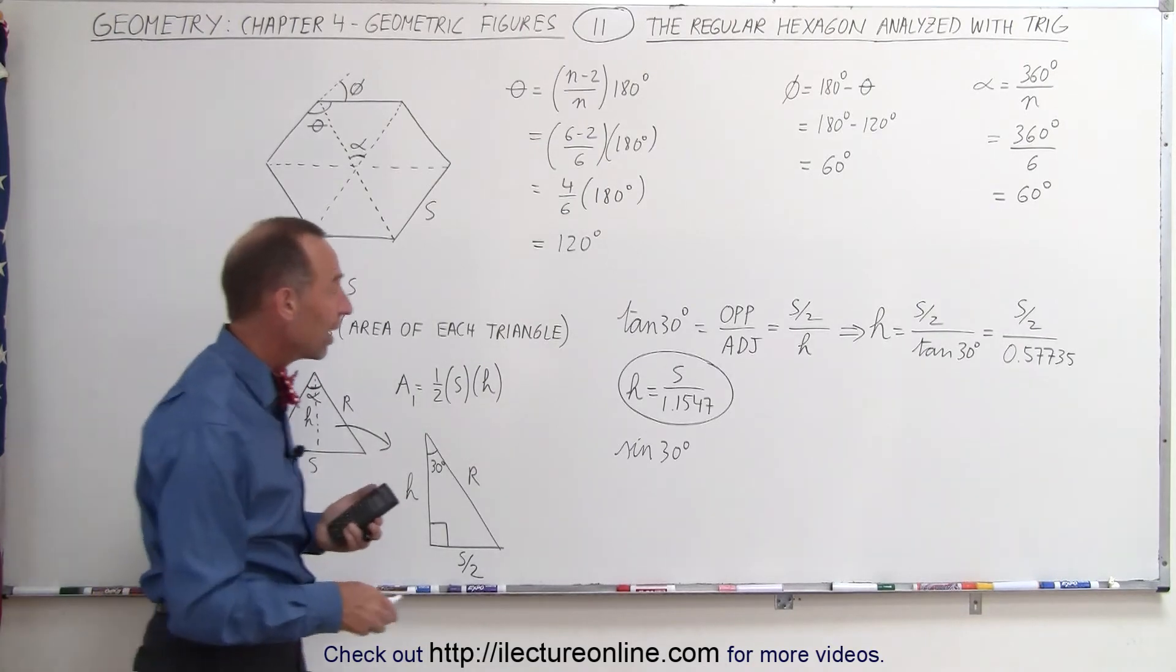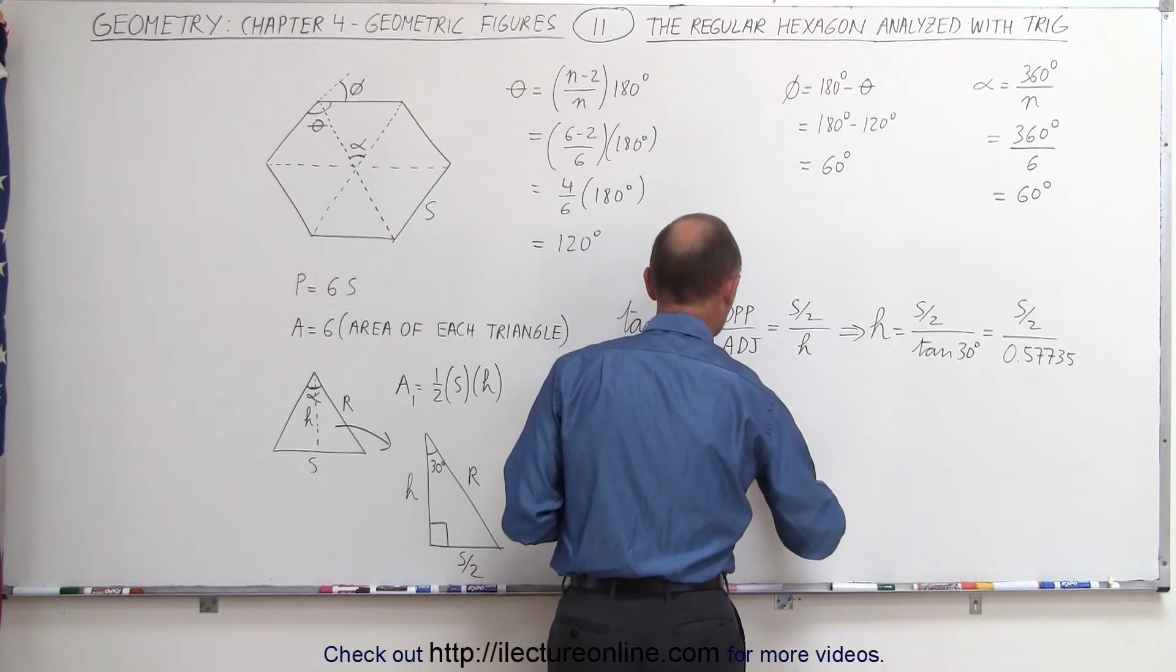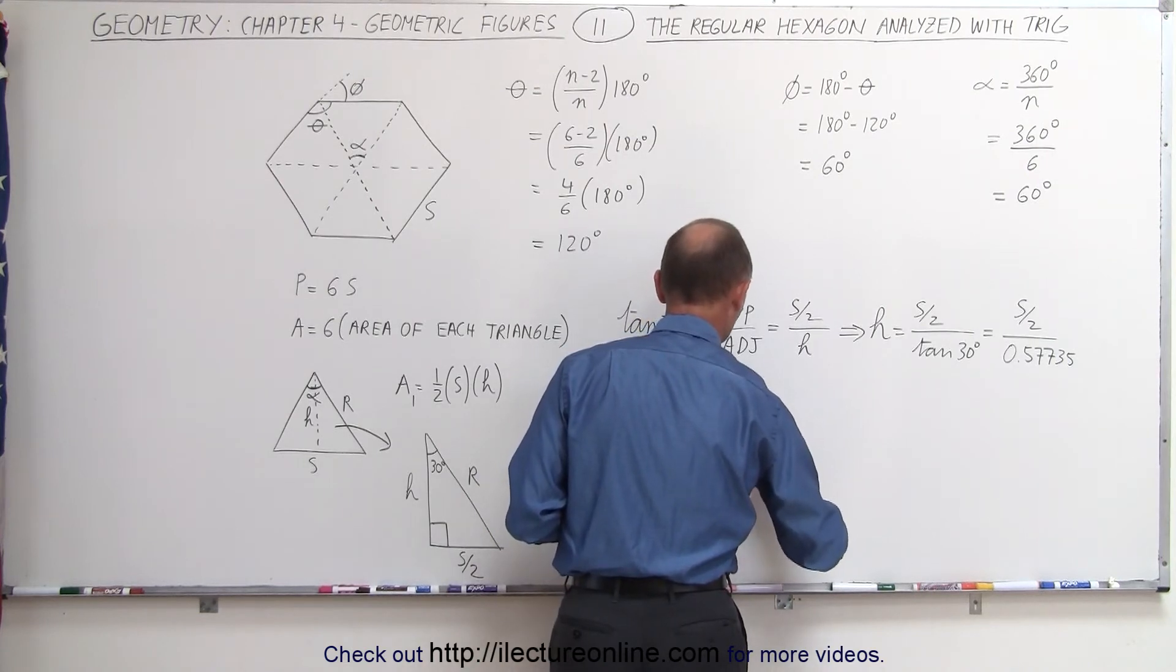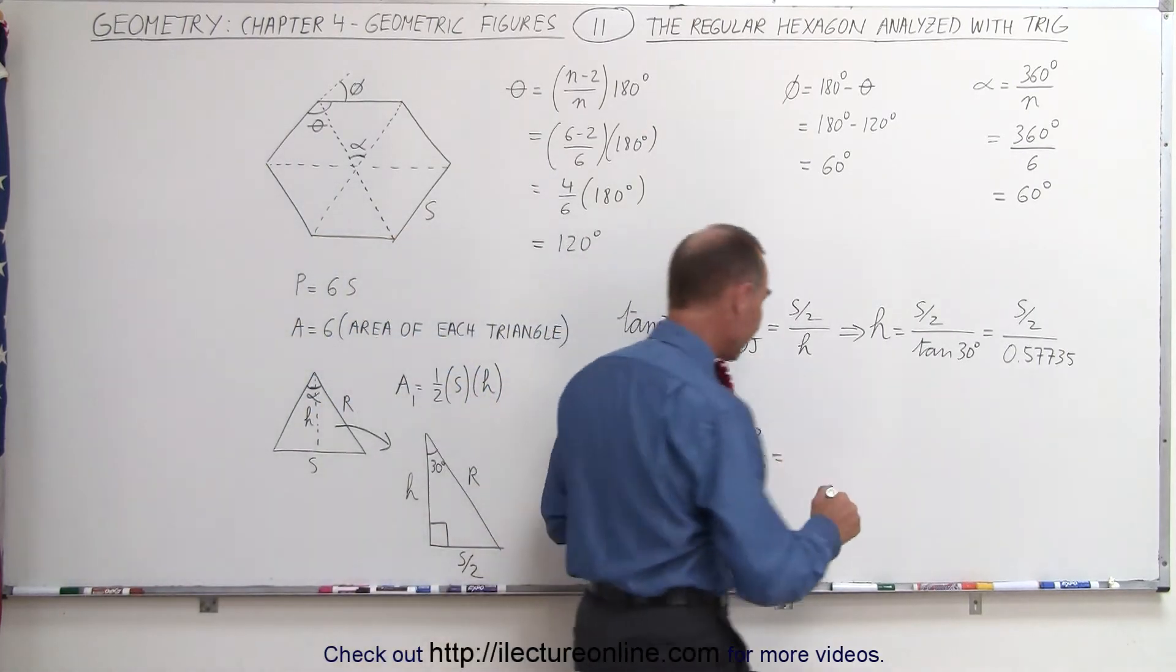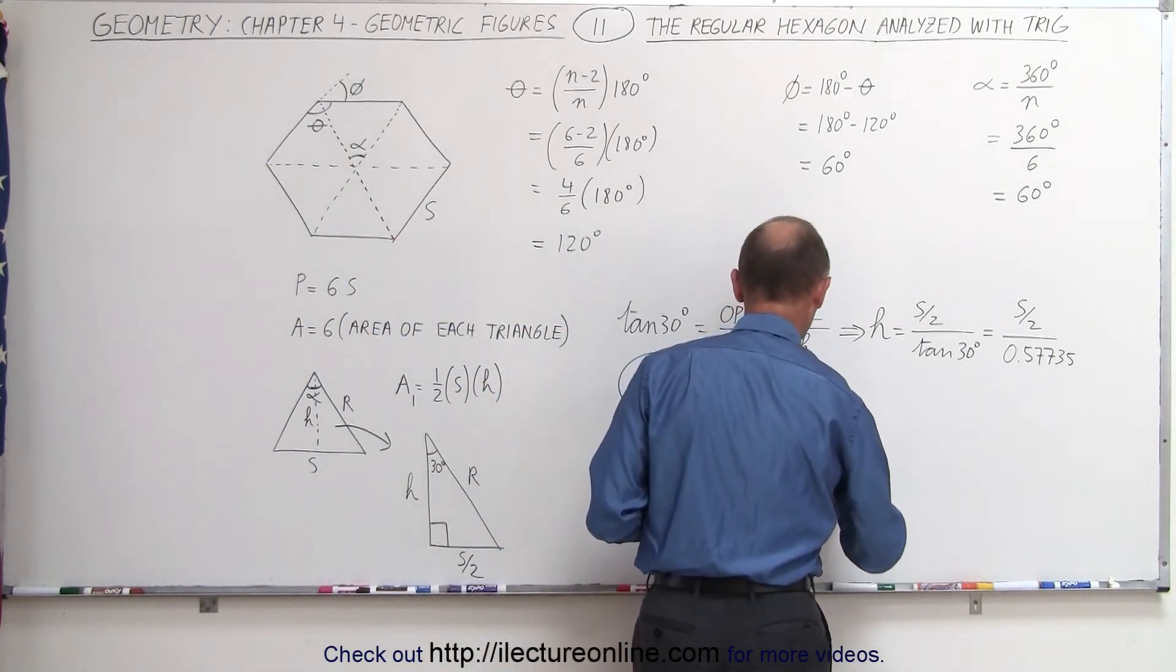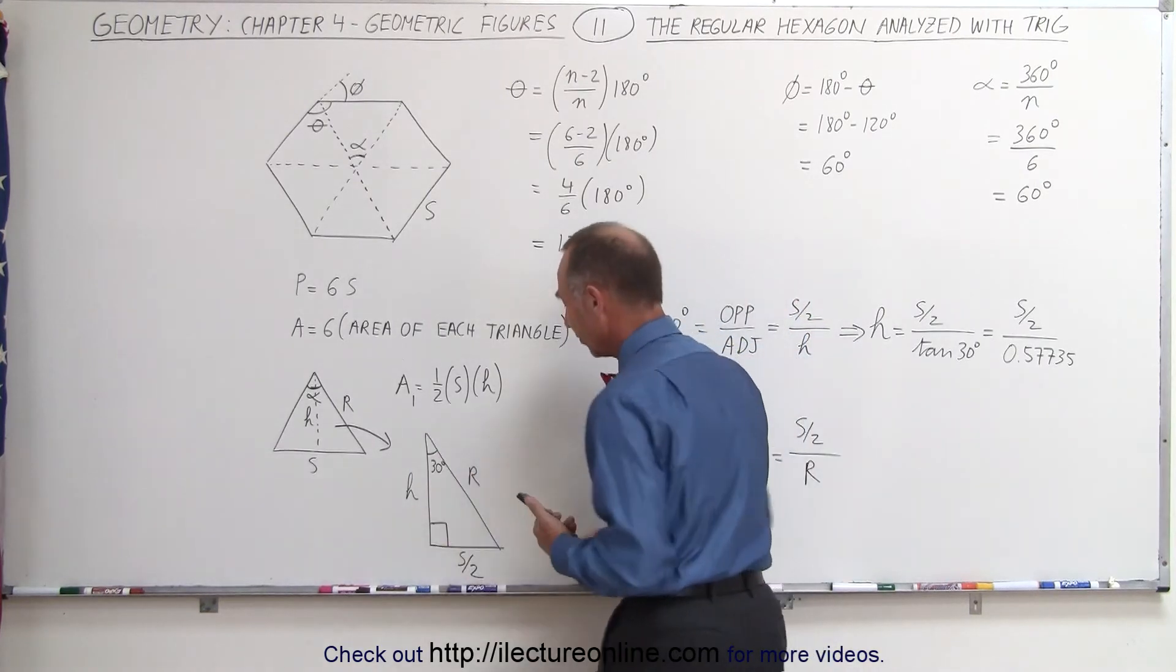The sine equals the ratio of the opposite side divided by the hypotenuse. The opposite side is S over 2, and the hypotenuse is R. So sin(30°) = (S/2)/R.